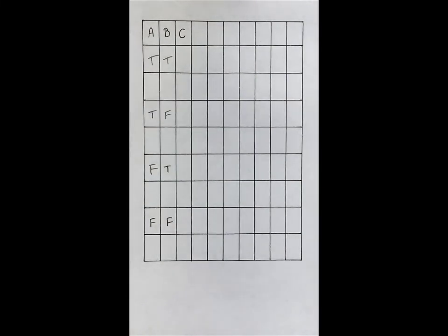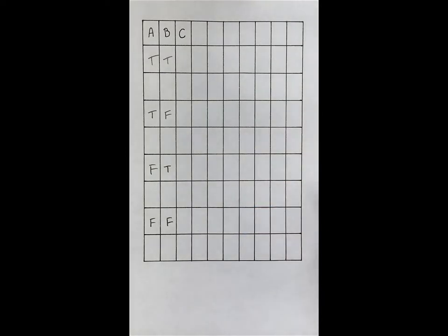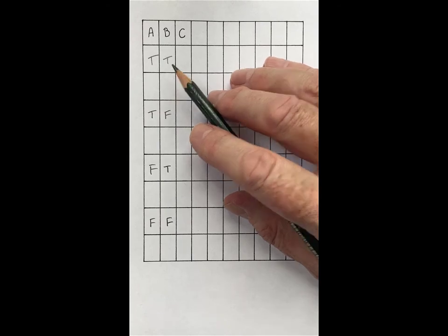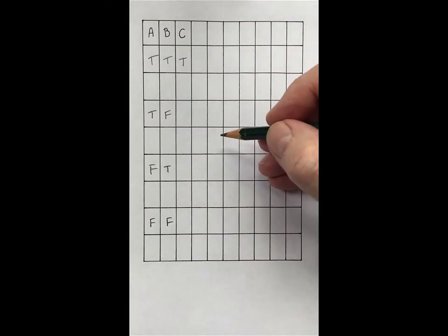What if we need to consider a third basic sentence? Well, for each kind of situation that we have already, there will be situations in which the new sentence is true and situations in which the new sentence is false. For example, think of situations in which A is true and B is true. We need to allow for situations like this in which C is also true and situations like this.